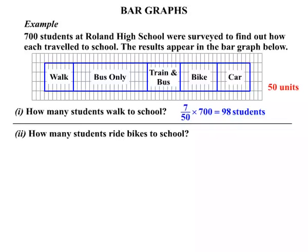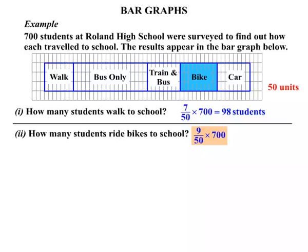How many students ride bikes to school? We look on our bar graph at the bike section. Measuring across, we find there are 9 units — 9 units out of a possible 50 units. So 9/50 ride their bikes. But how many people? Well, out of 700 students, we multiply the fraction by 700 and we get 126. So 126 students ride bikes to school.